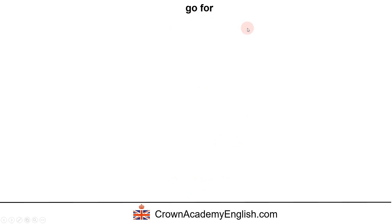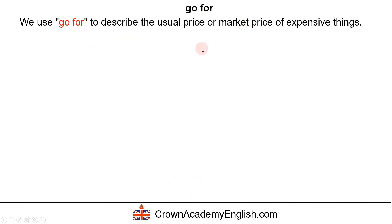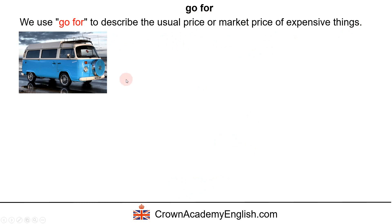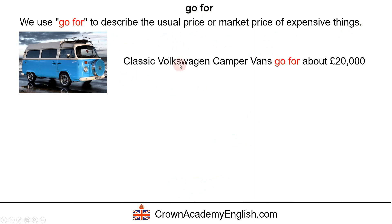Go for. We use go for to describe the usual price or the market price of expensive things, using the present simple. For example, classic Volkswagen camper vans — from the 1980s, about 30 to 40 years old — go for about 20,000 pounds. This is an estimate of the general price.